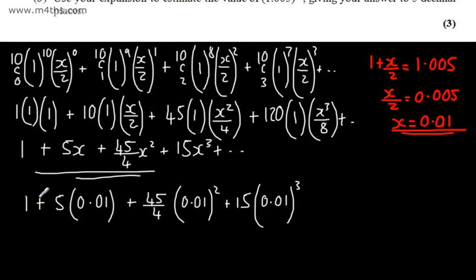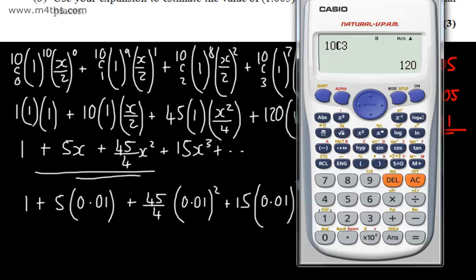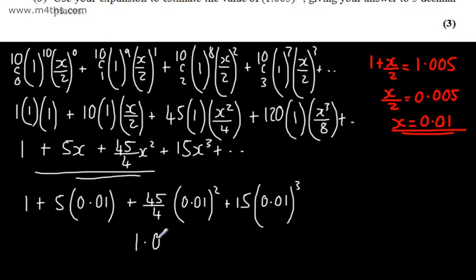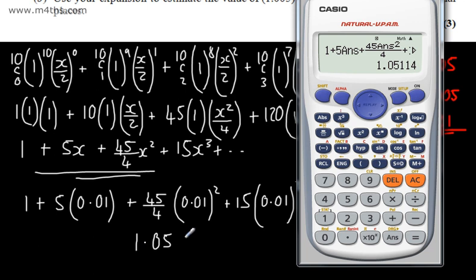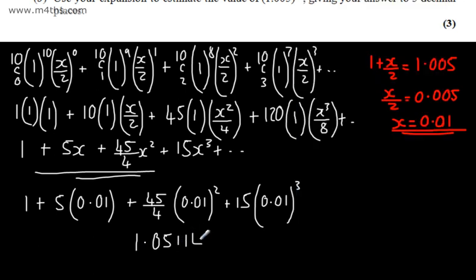You can go ahead and show the value of each of these. I'm just going to simply write them out as an answer once I've substituted it in. So what we're going to have is 1 + 5 lots of my answer, plus 45 lots of my answer squared, which I need to divide by 4, and then I'm going to have plus 15 lots of my answer, which I need to cube. That's going to give me 1, so writing this down, 1.05114. So that is given to 5 decimal places.